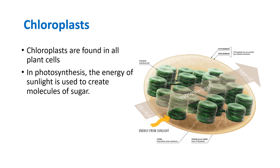Chloroplasts are found in plant cells. This image shows one chloroplast. Chloroplasts are the location for photosynthesis, which is the process by which plants make their own food.